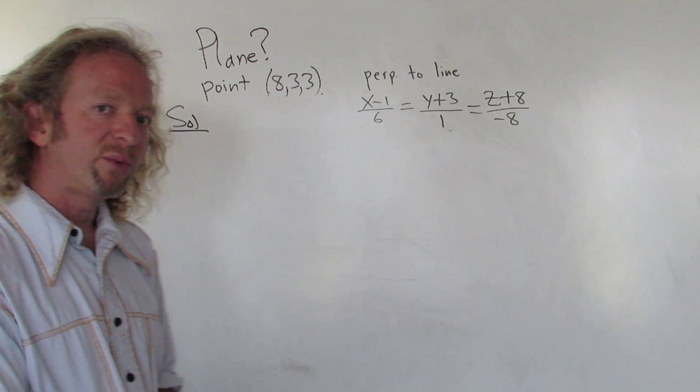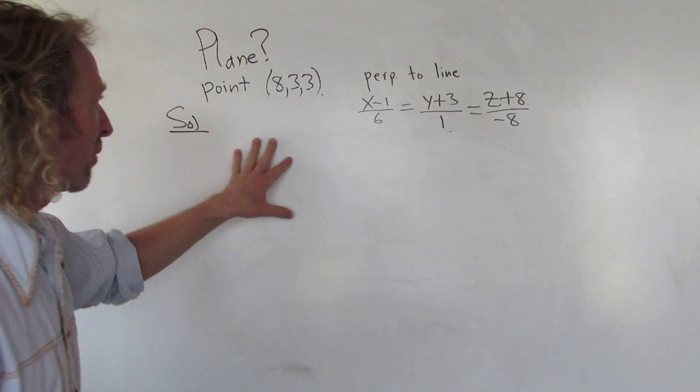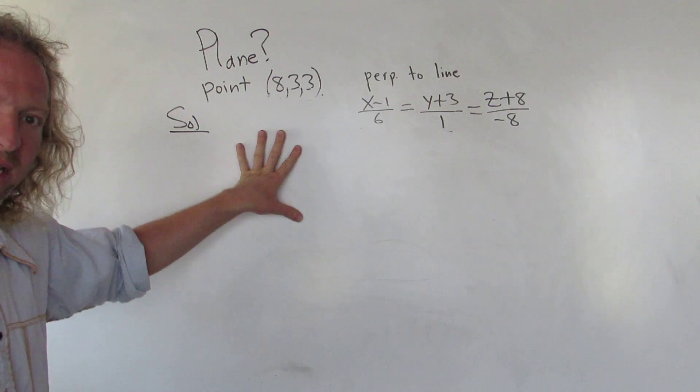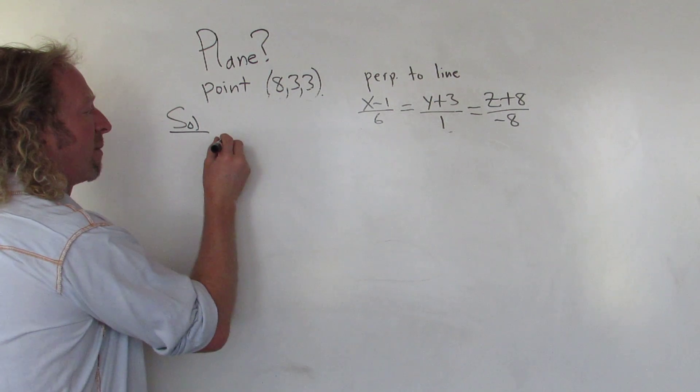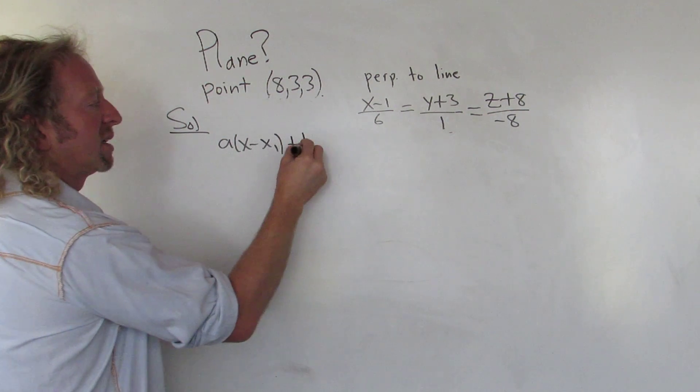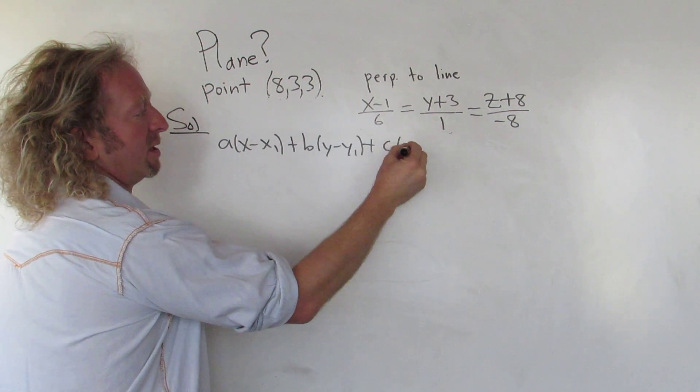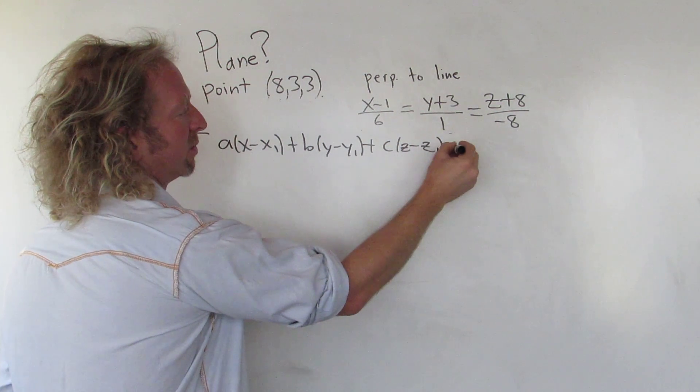To find the equation of the plane we need two things. We need a point and we need a normal vector. So before we do that I'm going to write down the formula that gives us the equation of the plane. The formula is a times x minus x1 plus b times y minus y1 plus c times z minus z1 and all of that is equal to zero.